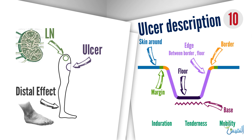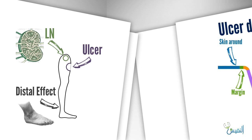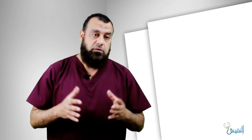The last of the ten items is the lymph node. Just as with a lump — which is a triad of the lump itself, distal effect, and lymph node — the same applies to the ulcer. Comment on whether the lymph node is significant: significant means more than one centimeter, painless, and hard. Also note the number and mobility of the lymph nodes.